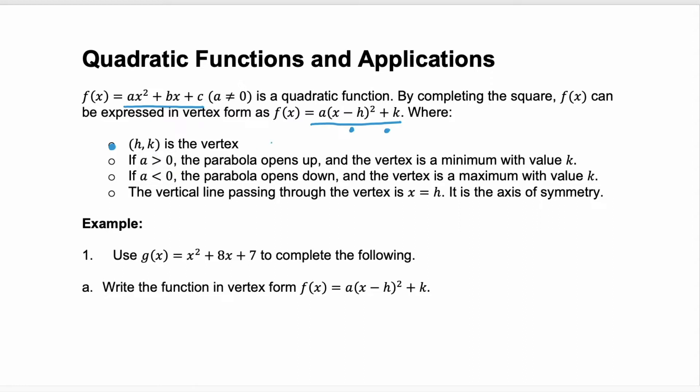Now, if the a, this leading coefficient is greater than zero, we know that the parabola is going to open up, so it'll have this shape, and that vertex will be a minimum. And if a is less than zero, a negative, we're going to have a parabola that opens down, so that vertex will be here, and it'll be a maximum.